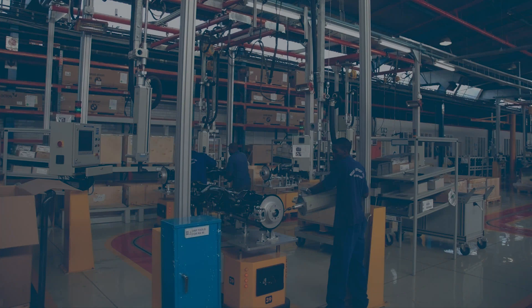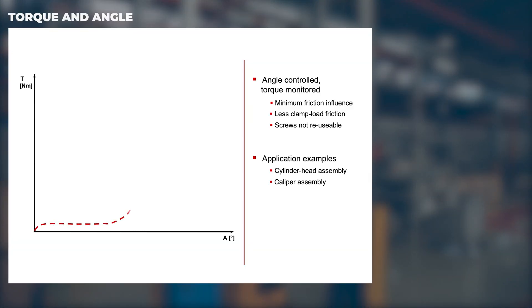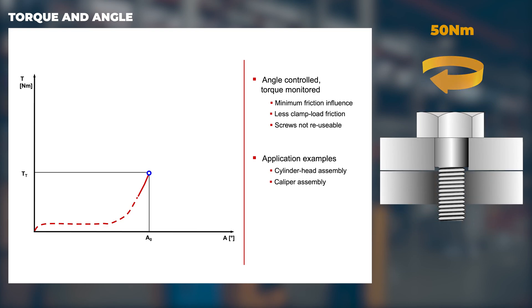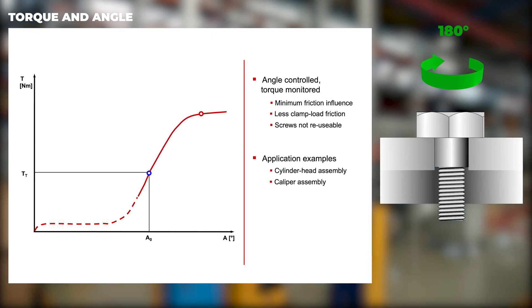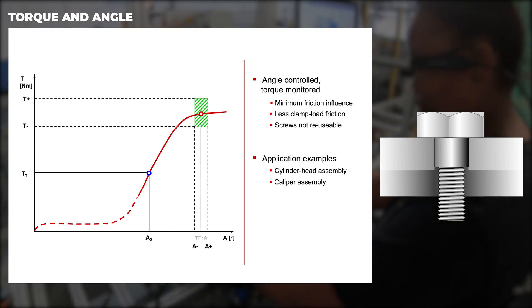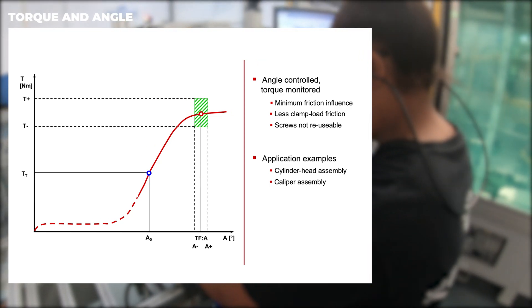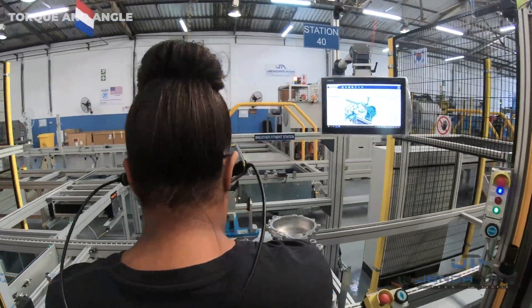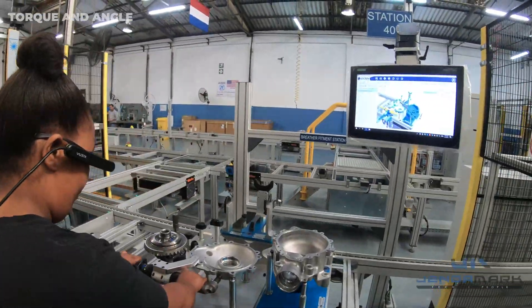By far the most common strategy adopted is torque and angle. With this method, we tighten to an initial lower torque where influences such as underhead friction and dirt have a minimal effect. We then tighten to a fixed angle of, for example, 180 degrees. The dirt and underhead friction have no influence on this angle measurement. As a result, we can now achieve our desired clamp load more accurately.